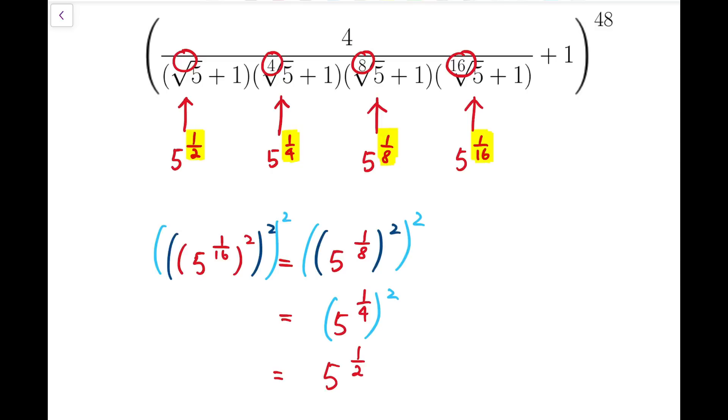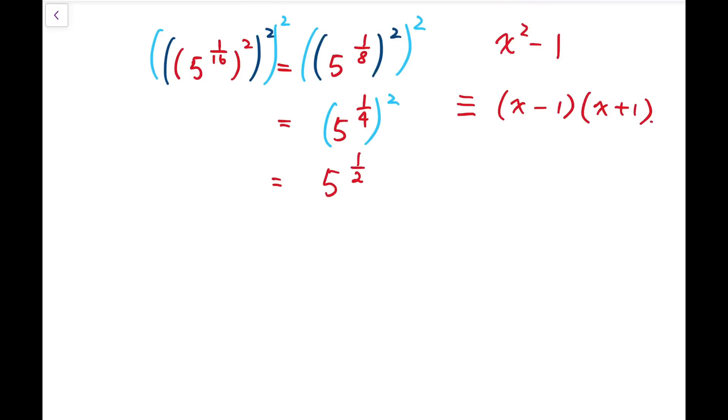Which is that, for any number x, x squared minus 1, I can rewrite that as (x minus 1) times (x plus 1). Let me explain the reason why this identity is useful.